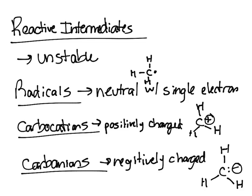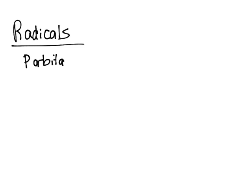We have to recognize the stability of radicals, carbocations, and carbanions. That's really important in organic chemistry. When it comes to radicals, we'll start off with radicals. Radicals have a p-orbital with one electron.